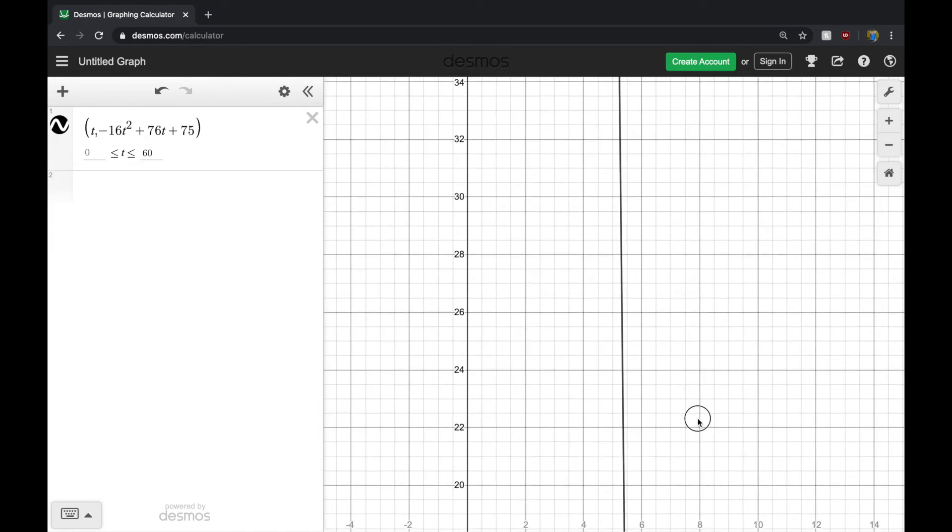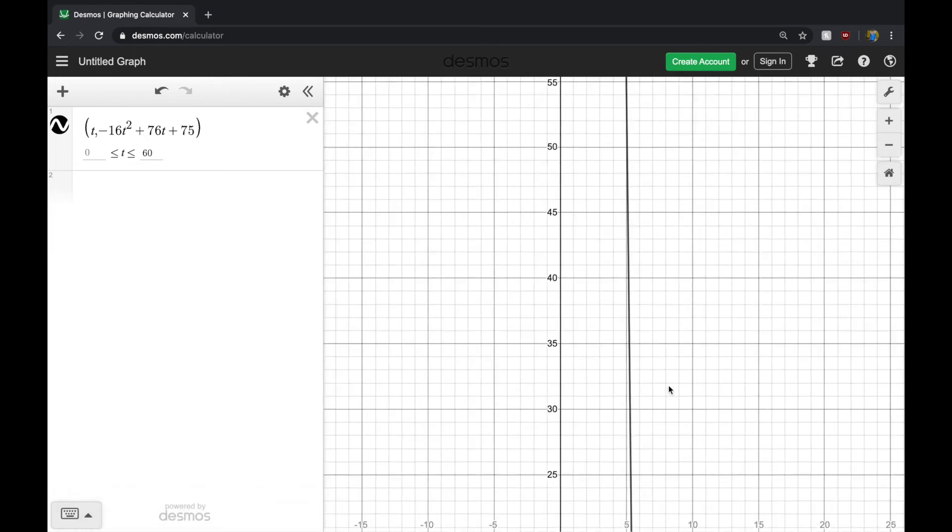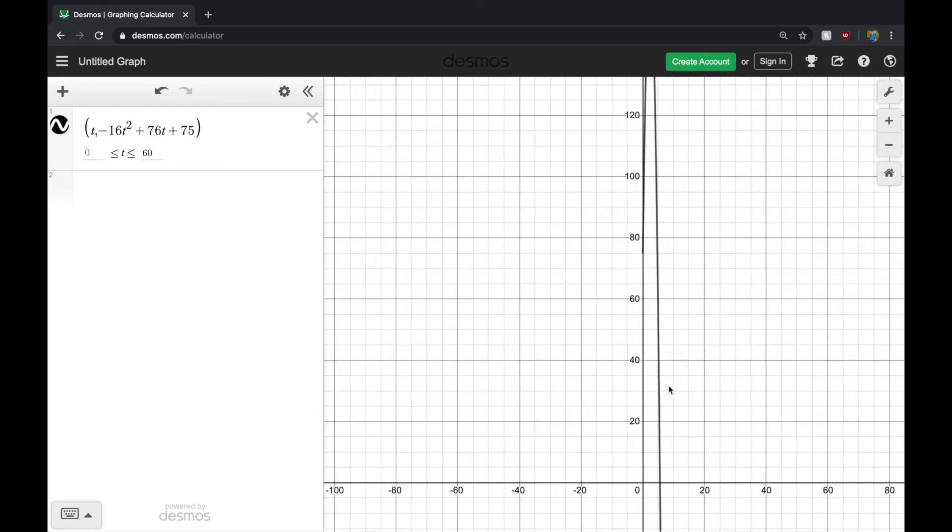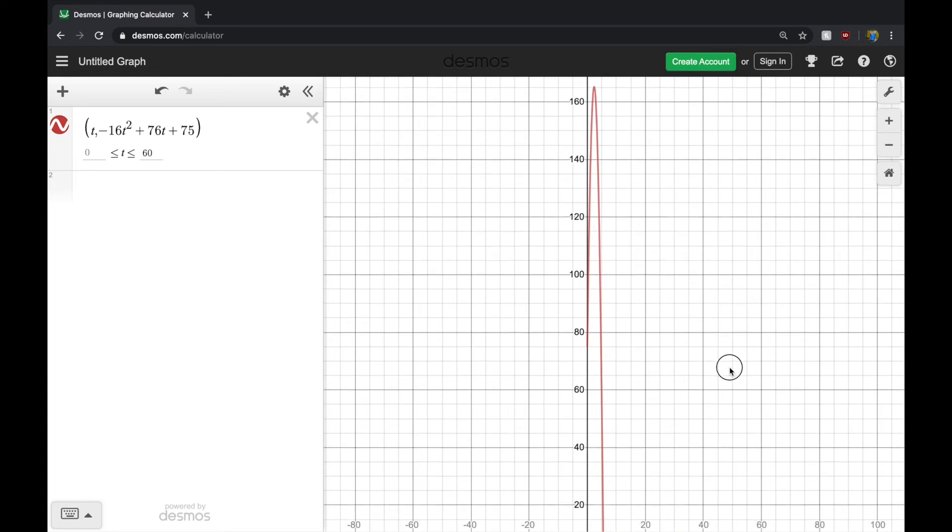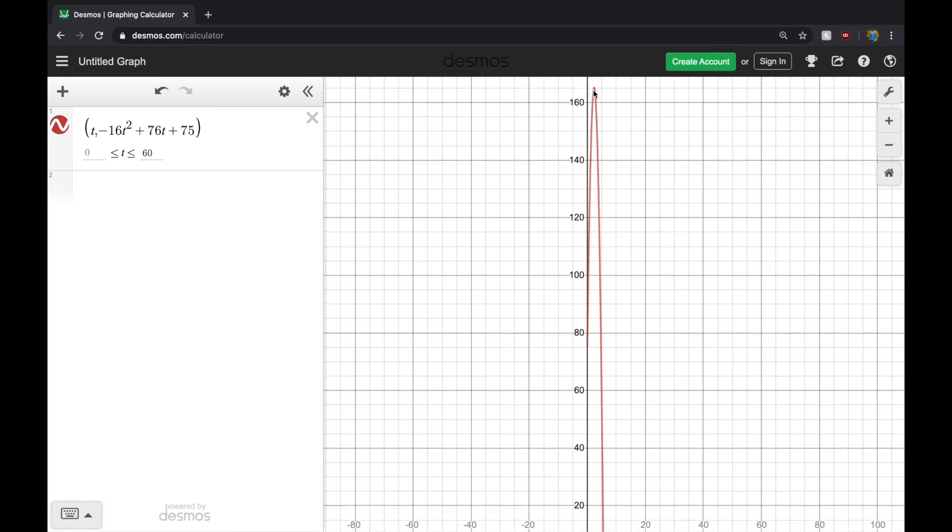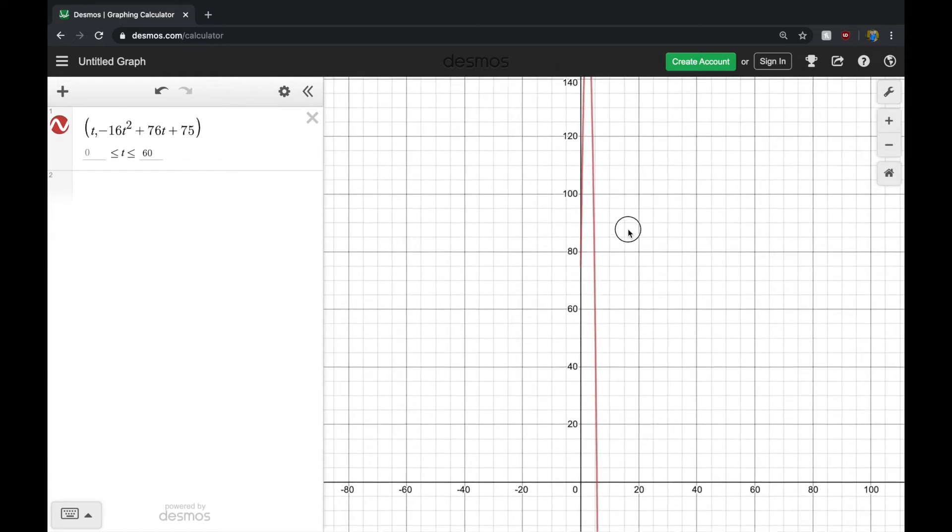So this is going to give you a very clear idea of what the height of the flare is going to be at any given point. We can see that it reaches a height of over 160 feet. And it's launched from 75 feet, and then it just goes straight up and straight down.